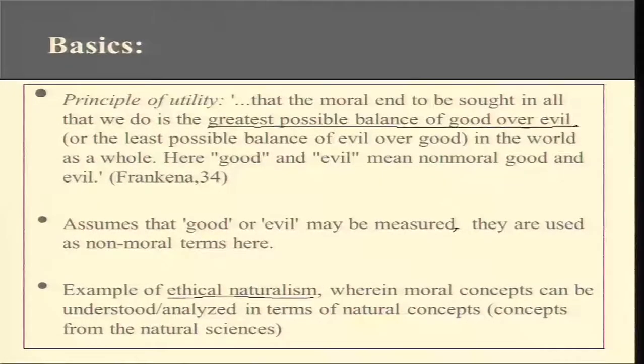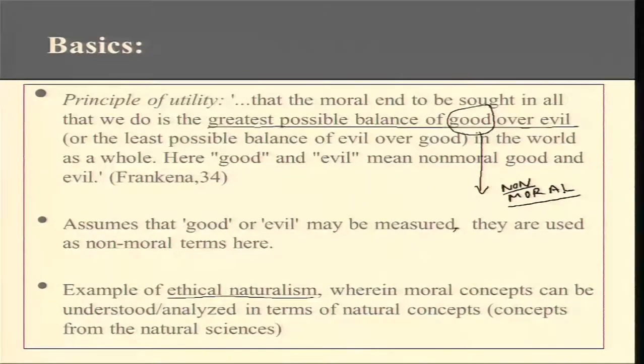The Utilitarian makes a claim that we bring about something that is good for the greatest good of the greatest number. When we talk about agents, we are talking about everyone — it could be domain specific, or universally, including the whole world. An action is right if it brings about the greatest good of the greatest number. Reading the statement once more: it is the greatest possible balance of good over evil. Here, what is meant by good is a non-moral good, and so is evil here — a non-moral evil.